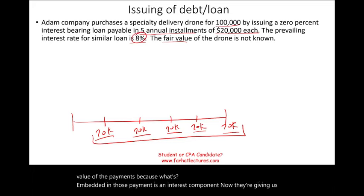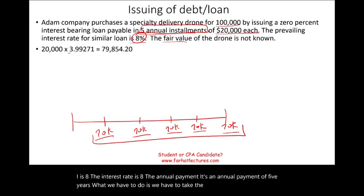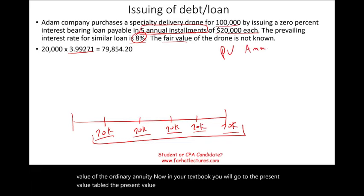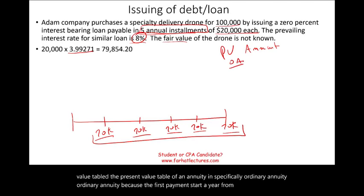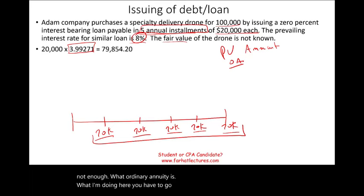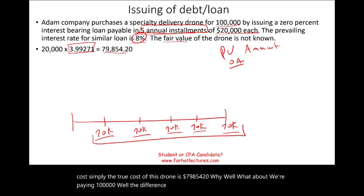The true value of the equipment is the present value of the payments, because what's embedded in those payments is an interest component. The interest rate is 8%; we know the annual payment; it's five years. We take the payment times the present value of the ordinary annuity factor — ordinary annuity because the first payment starts a year from now. If you don't know what an ordinary annuity is, go to the time value of money chapter. The true cost of this drone is $79,854.20. The difference between $100,000 and $79,854.20 is interest — you are financing this transaction.